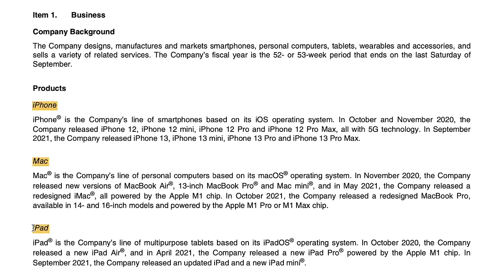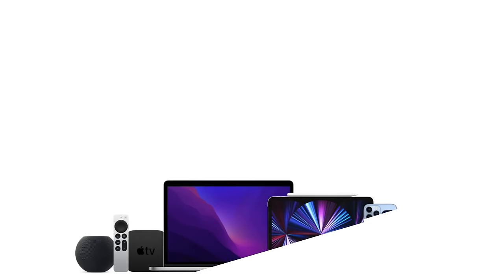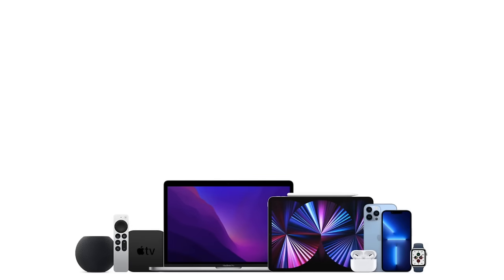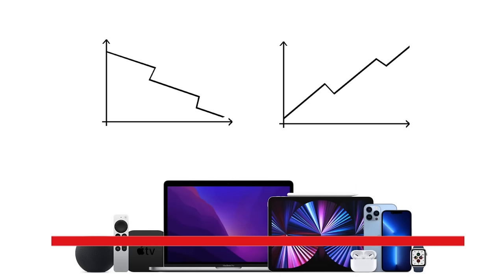Apple also has a broader category — wearables, home, and accessories — that consists of products like AirPods, Apple TV, Apple Watch, and Beats headphones. The reason why this is so important is because this is where companies lay out the different segments of a business. Something I really like about Apple is that they provide specific sales details for each of these product categories, which means we can see how sales are trending for iPhones compared to the Mac and iPad. A lot of companies don't actually provide sales information down to each specific product, but for us as investors, the more detail the better.